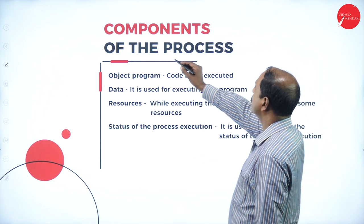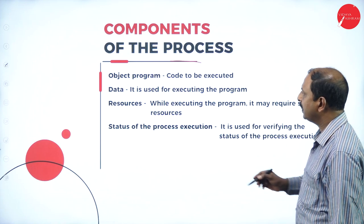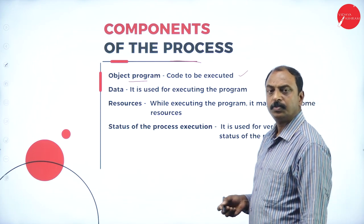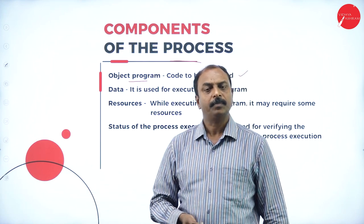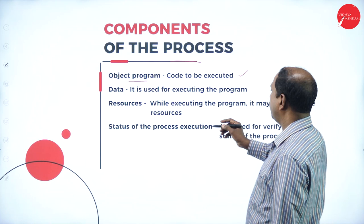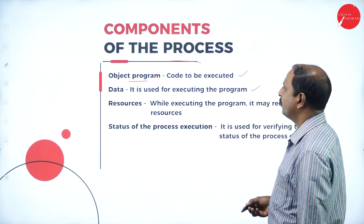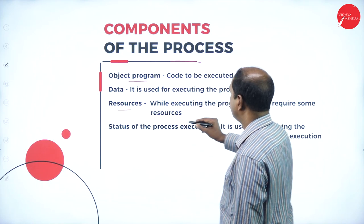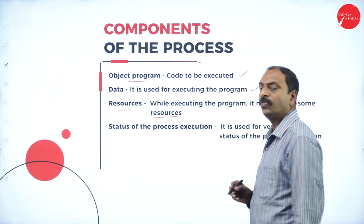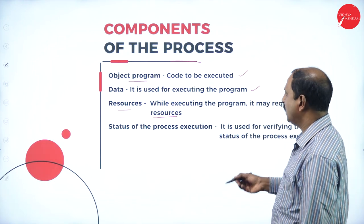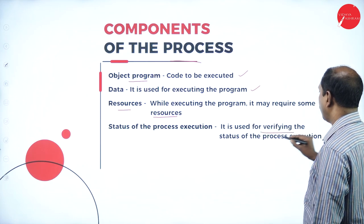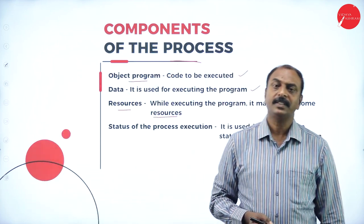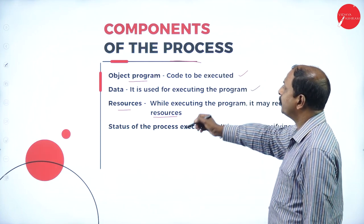Now we will see the components of a process. The first component is the object program — that is, code to be executed. The source program is converted into an object program during program execution. Next is data, which is used for executing the program. Then resources — hardware or software resources that the process makes use of. Finally, status of the process, which is used for verifying whether the process is running, not running, or in a halt state.